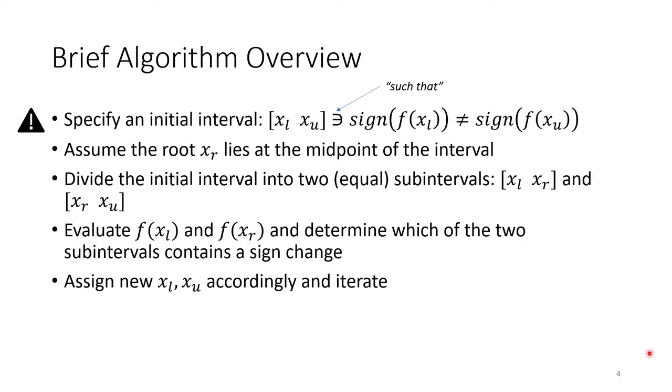The bisection method is known as an incremental search method because you must specify an increment or an interval over which to search for the root. The interval must contain two points which have different signs when evaluated by the function. This backwards-looking E symbol means such that, so this entire statement reads: the bracket xl and xu must be chosen such that the sign of f(xl) differs from the sign of f(xu). This is a crucial step that many people overlook when writing their bisection codes in MATLAB.